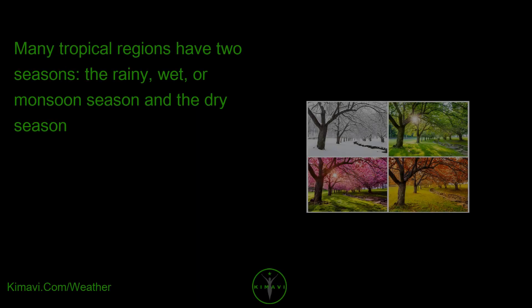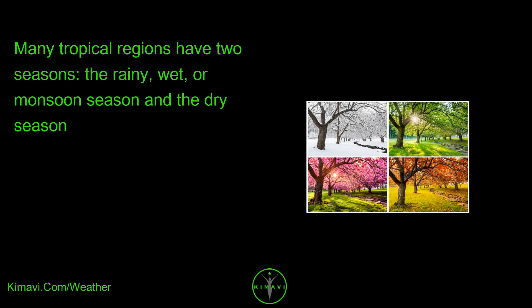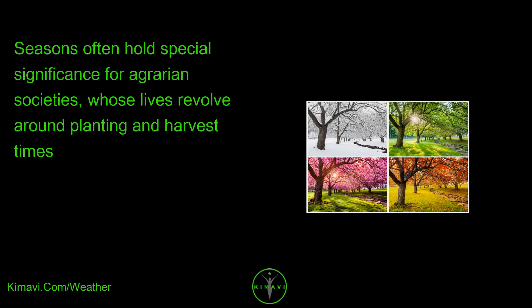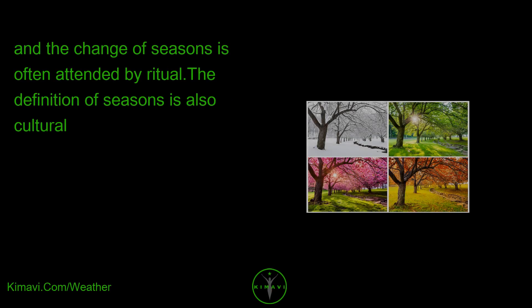Many tropical regions have two seasons: the rainy, wet, or monsoon season and the dry season. Seasons often hold special significance for agrarian societies whose lives revolve around planting and harvest times, and the change of seasons is often attended by ritual. The definition of seasons is also cultural.